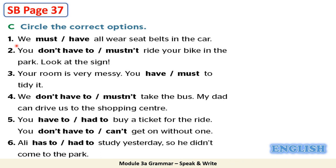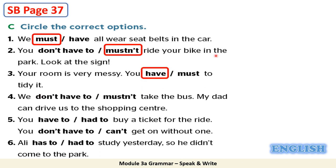Let's check your answers now. One: we must all wear seat belts in the car. Two: you mustn't ride your bike in the park — look at the sign. Three: your room is very messy, you have to tidy it.